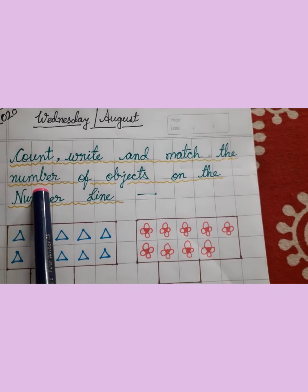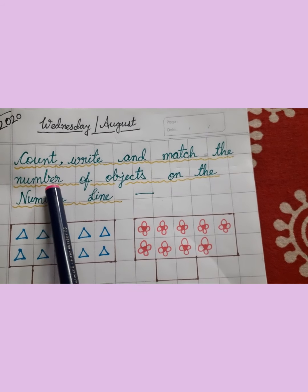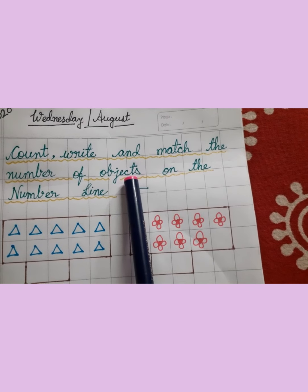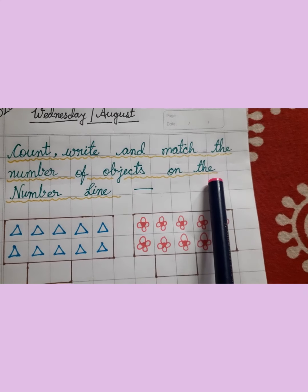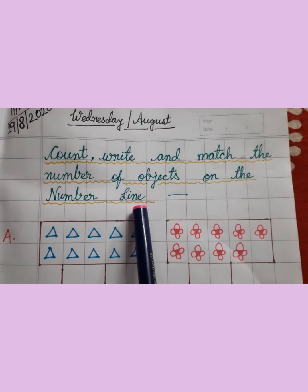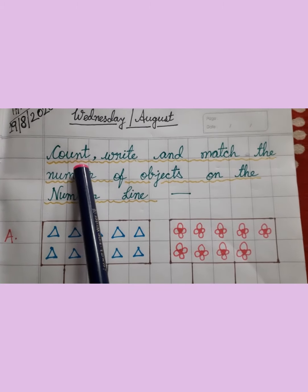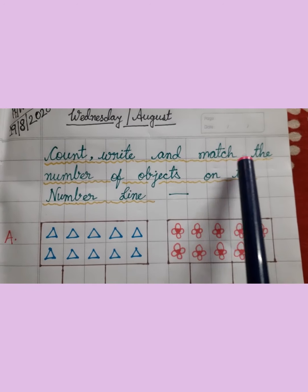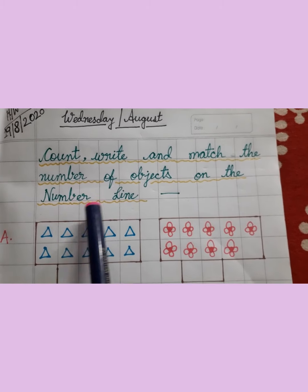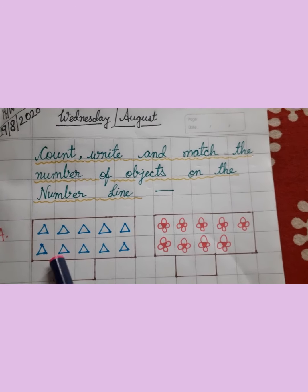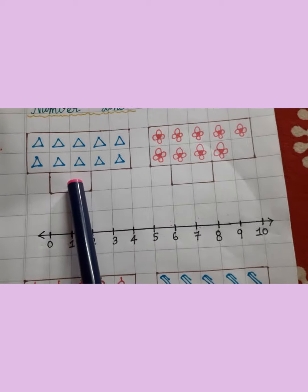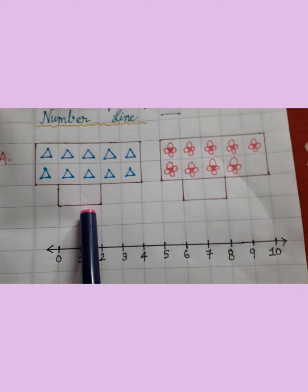T-H-E, The. N-U-M-B-E-R, Number. L-I-N-E, Line. The number line. Here you can see we have drawn some triangles. You have to count. Let's count.